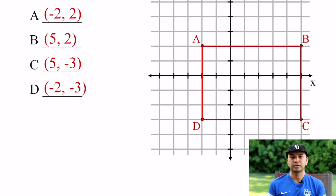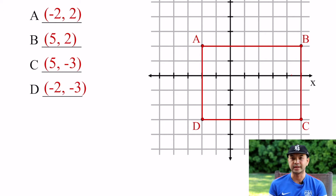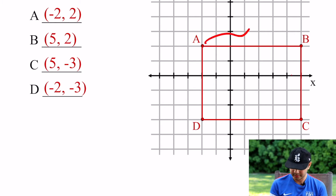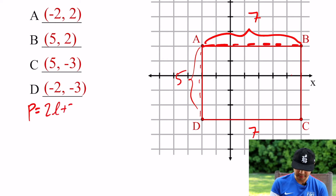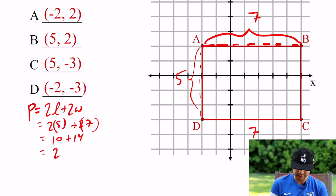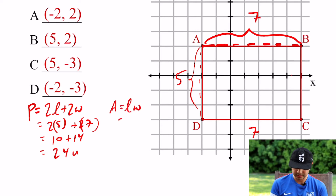So C and D are (5, -3) and (2, -3). Now it's asking for the perimeter and area of the figure. We're just going to count — no subtracting integers yet. Counting gives us a length of 7 and a width of 5. Perimeter equals 2 times length plus 2 times width: 2(5) + 2(7) = 10 + 14 = 24 units. Area is length times width: 5 × 7 = 35 square units.